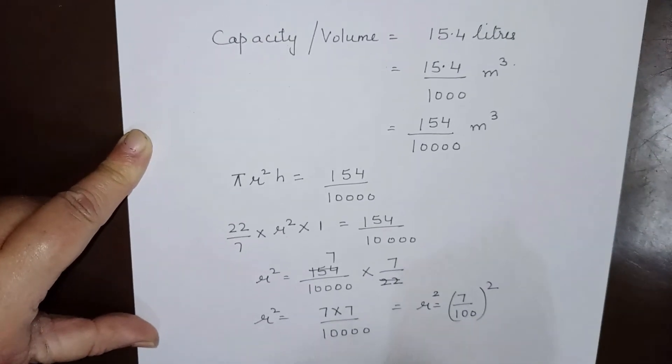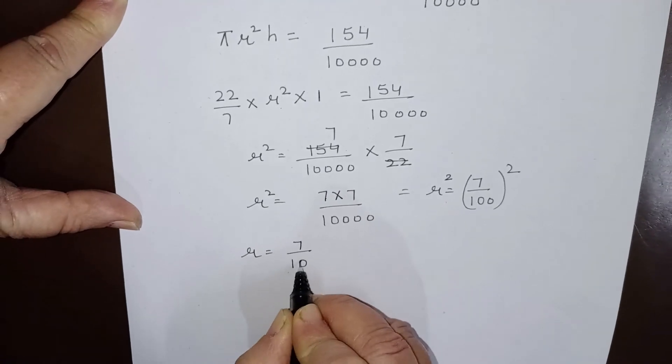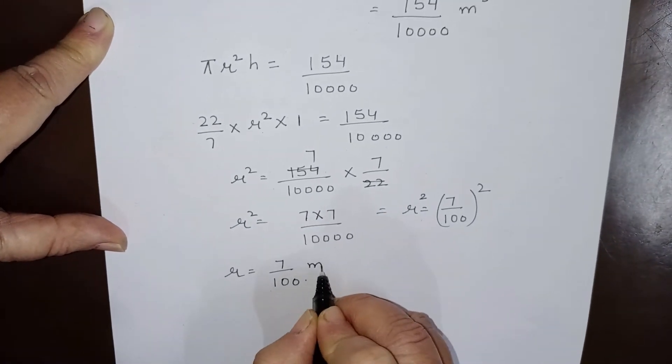This is 7 times 7, which is 7 squared. 10,000 is the square of 100. So r will equal 7/100 meters.